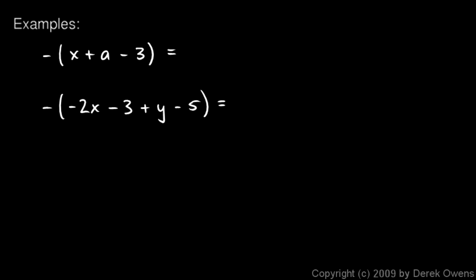Let's look at some examples. Negative, and then in parentheses, x plus a minus 3. Each of these three things is going to change sign because of this negative sign out front. So the x will become negative, the a will become negative, and the 3, which is currently negative, will become positive. So this will be equal to negative x minus a plus 3.